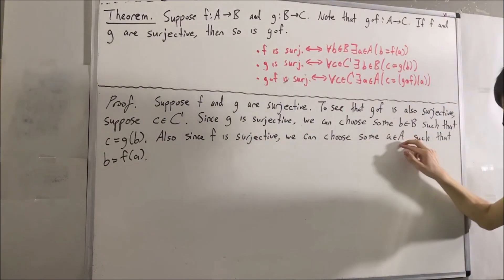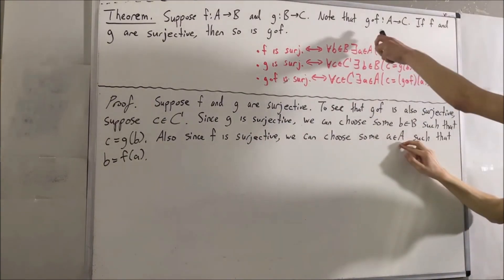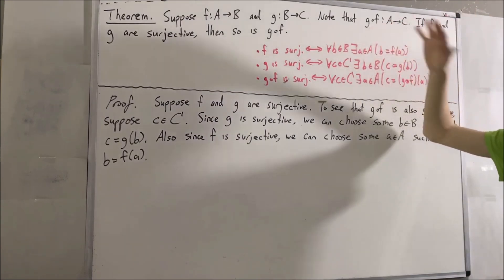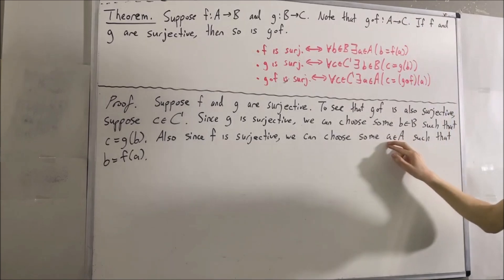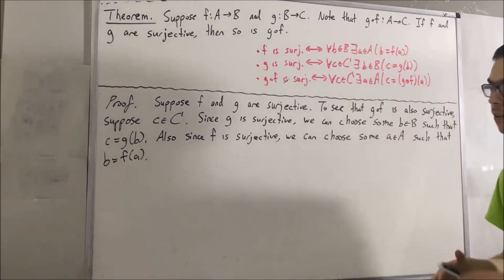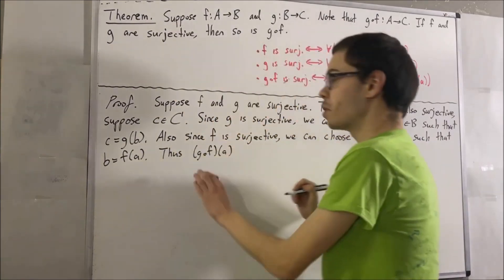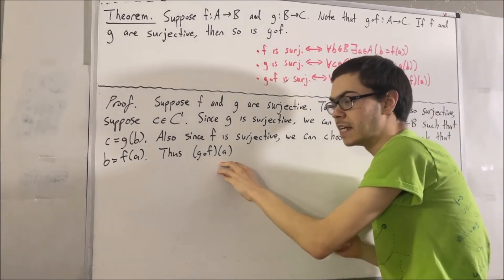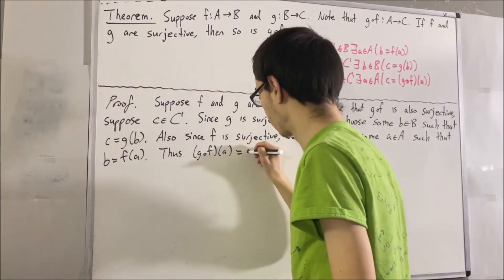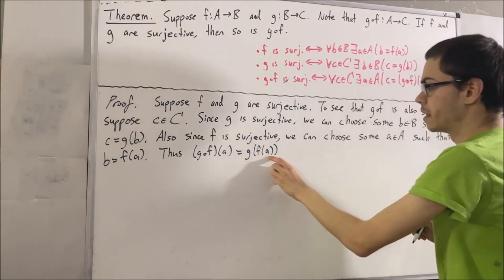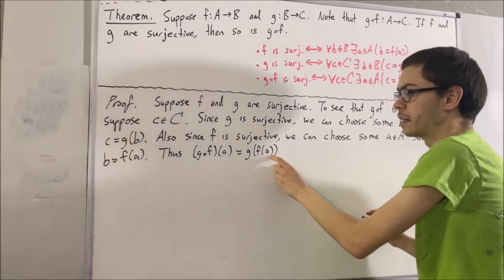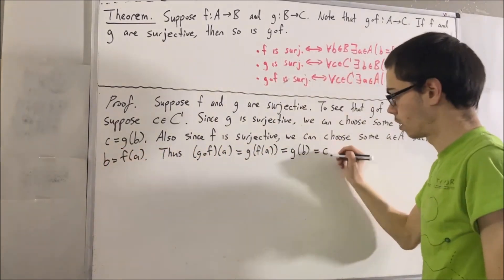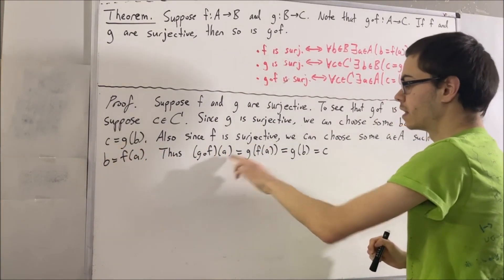Now, we know that a is an element of A, and g compose f is a function from A to C, which means that g compose f has a functional value at a. So we can make sense out of g compose f of a. From composition of functions, we know that g compose f of a is the same thing as g of f of a. And f of a is just equal to b, so we can replace f of a with b. But g of b is equal to c. So we have that g compose f of a is equal to c.